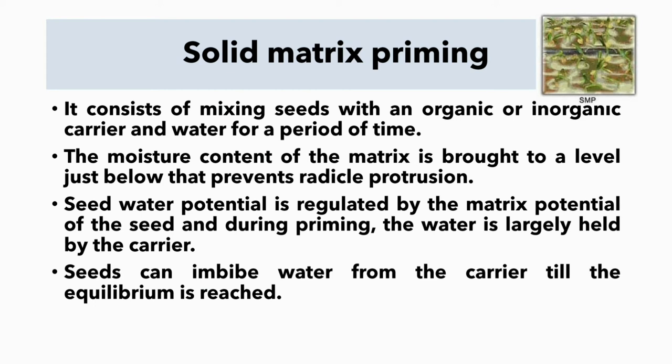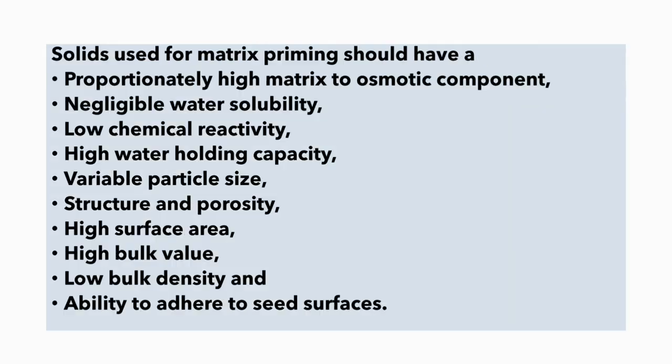Solid matrix priming consists of mixing seeds with an organic or inorganic carrier and water for a period of time. The moisture content of the matrix is brought to a level just below that which prevents radicle protrusion. Seed water potential is regulated by matrix potential, and during priming, water is largely held by the carrier. Seeds can imbibe water from the carrier till equilibrium is reached. The solids used should have high matrix to osmotic component, negligible water solubility, low chemical reactivity, high water holding capacity, variable particle size structure and porosity, high surface area, low bulk density, and ability to adhere to seed surfaces.